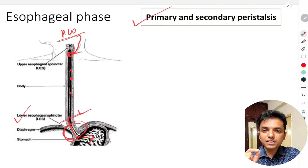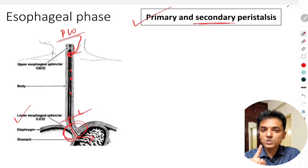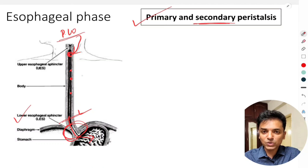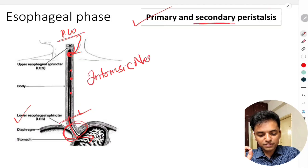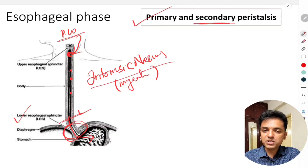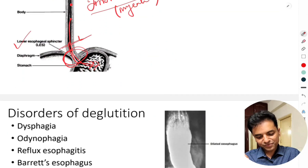If the primary peristaltic wave is unable to move all food particles into the stomach, the remaining food in the esophagus will stimulate mechanoreceptors in the esophageal wall. This triggers another wave of peristalsis called secondary peristalsis. Unlike primary peristalsis, secondary peristalsis is not a continuation of the pharyngeal peristaltic wave — it originates from the esophagus itself and is under the control of intrinsic nerves in the esophageal wall, such as the myenteric plexus.